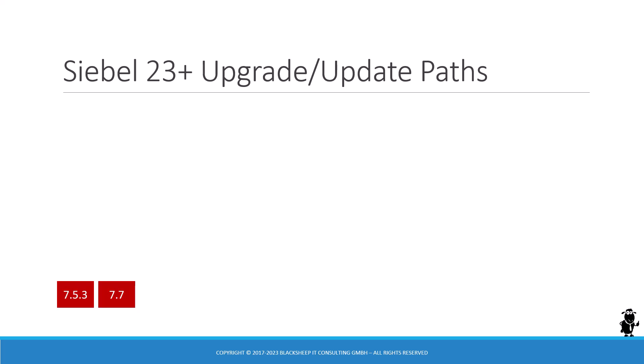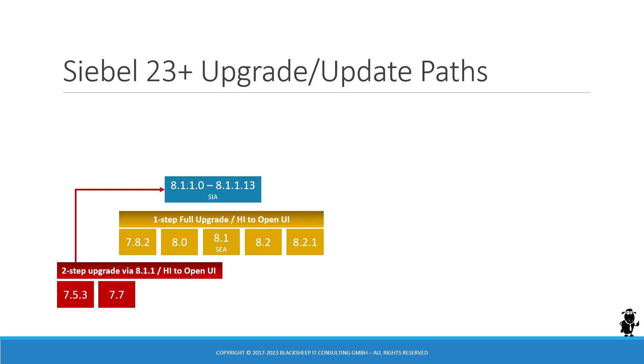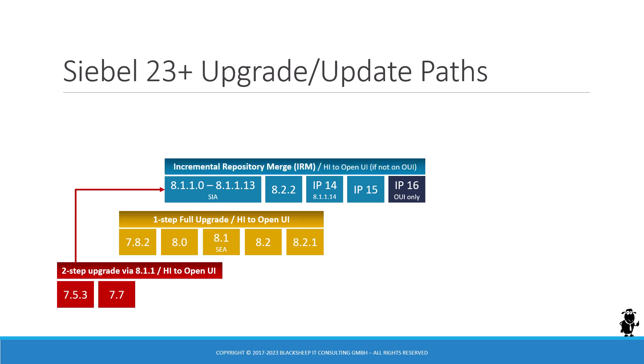If you have version 7.5 or 7.7, that's really old — 20 years and older — so you're in for a two-step upgrade according to the upgrade guide in Bookshelf. If you are slightly higher, 7.8 to 8.2, you still have to do a one-step full upgrade. For both, you're still on high-end activity on Internet Explorer — unbelievable — and you have to go to Open UI as well. The two-step upgrade takes you to 8.1.1. If you have that or any other version up to IP 16, you're in for what's known as an incremental repository merge, or IRM. So all of these are upgrades.